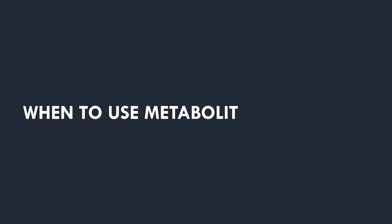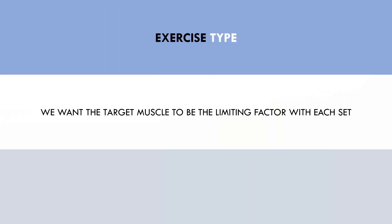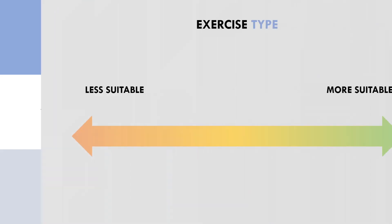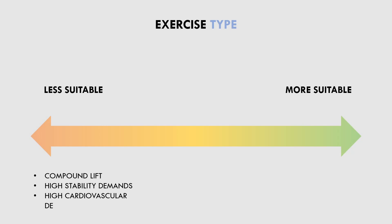Now let's cover when it is appropriate to implement metabolite training. The first factor is what exercise it will be used for. During hypertrophy training, we want the target muscle to be the limiting factor for each set. Metabolite style training is probably least suitable for exercises involving many muscles and joints and those with high stability demands, because these are more likely to result in fatigue of accessory or stabilizer muscles, limiting the stimulus on the target muscle.